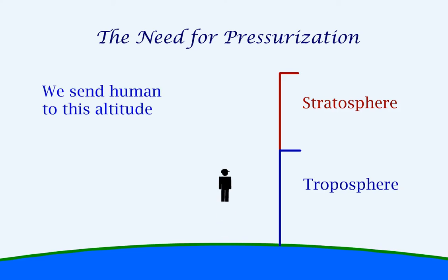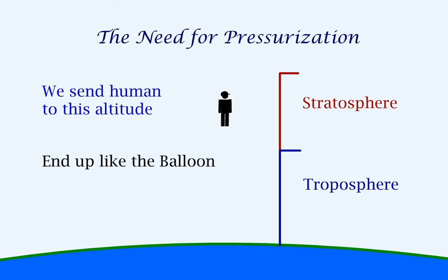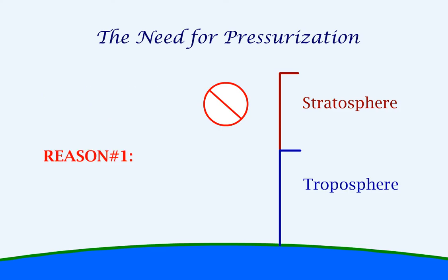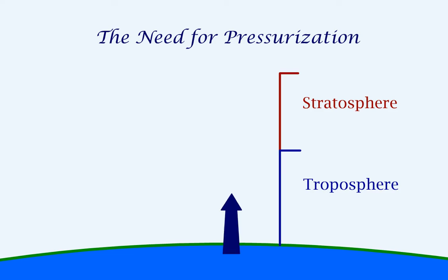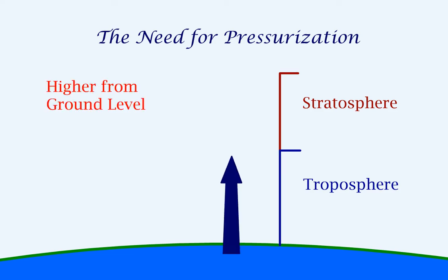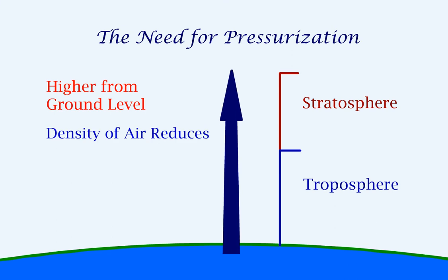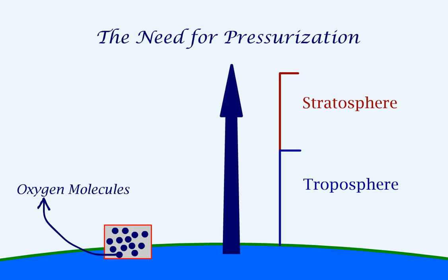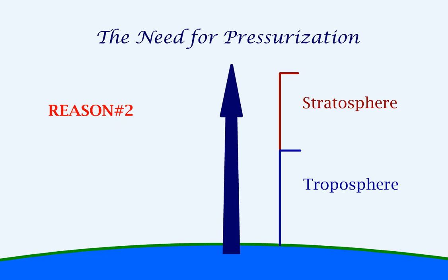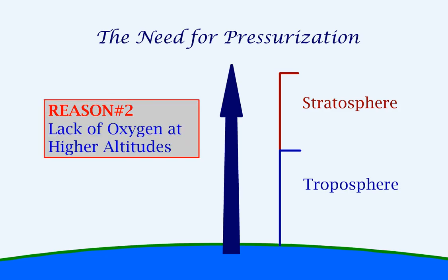Now, if we send a human to this altitude, the result would be the same as the balloon since the ambient pressures are too low. Hence, we have one reason why pressurization is required — the human body cannot survive at low pressures. Another reason is that as we go higher up from the ground level, the density of air reduces and with that the oxygen content in the air decreases. This means that the number of oxygen molecules in the air will reduce as the altitude increases. So another reason why pressurization is required is the lack of oxygen available for breathing at higher altitudes.